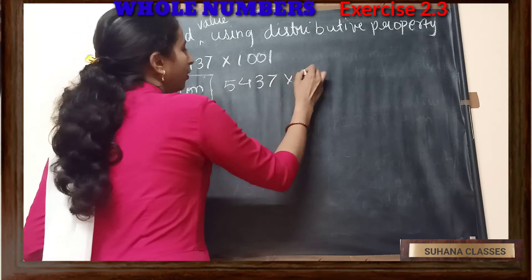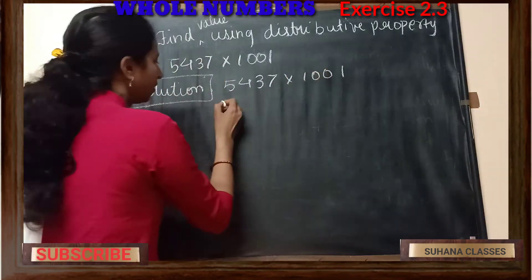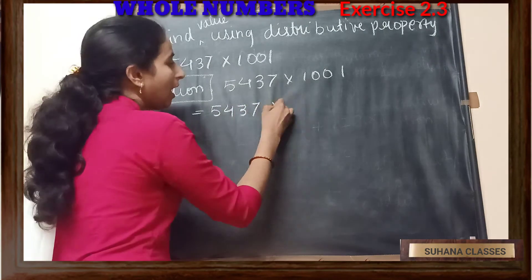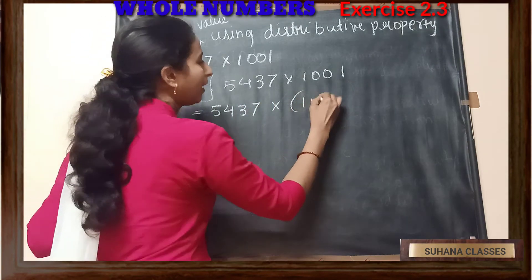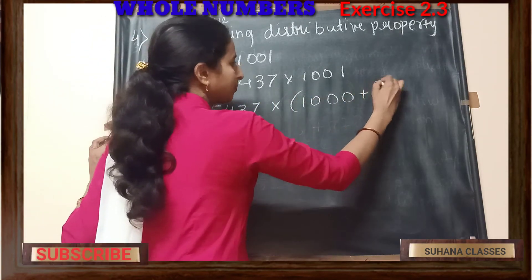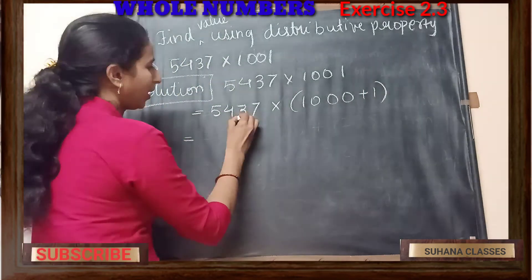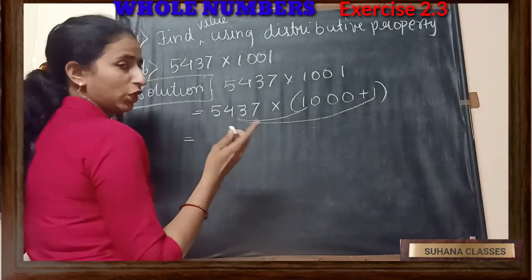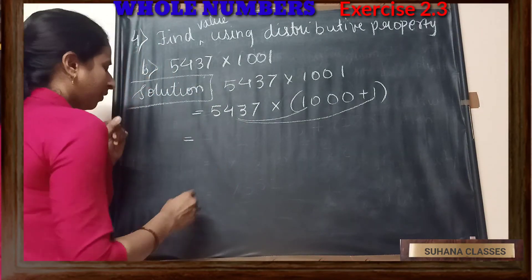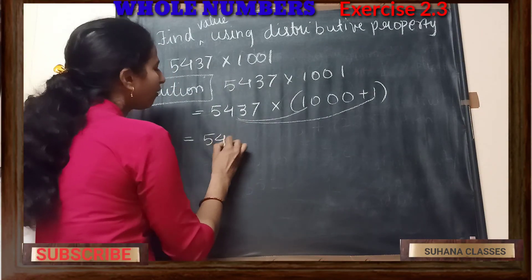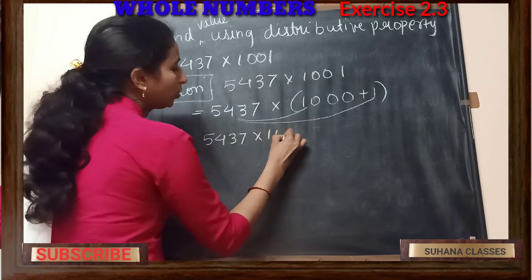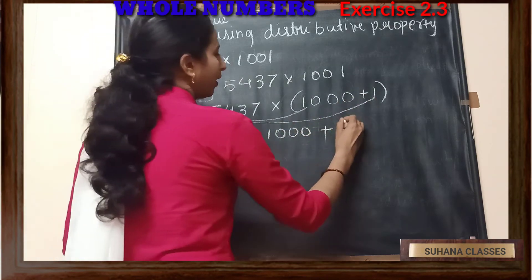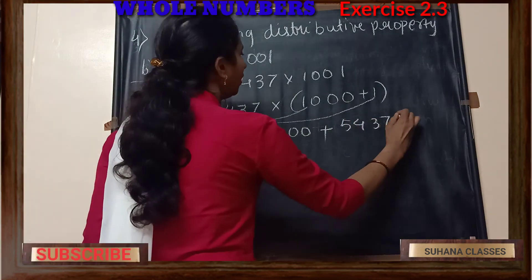5437 into 1001. I can write 5437 as it is, and 1001 I can write as 1000 plus 1. If I apply the distributive property, I have to multiply 5437 for each number in the bracket: 5437 into 1000, plus sign in between, and again 5437 into 1.